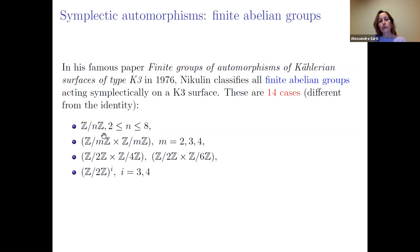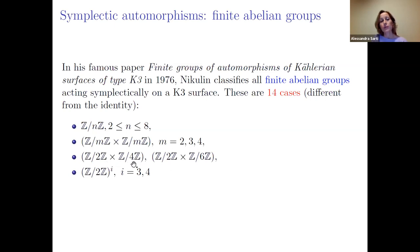The list includes ℤ/nℤ for n between 2 and 8 — so prime orders can only be 2, 3, 5, and 7. There are also groups ℤ/mℤ × ℤ/nℤ for m equal to 3 and 4, groups ℤ/2ℤ × ℤ/4ℤ, ℤ/2ℤ × ℤ/6ℤ, and (ℤ/2ℤ)³ or (ℤ/2ℤ)⁴. This was a first step in the classification.